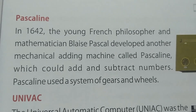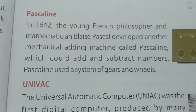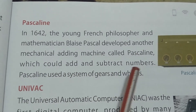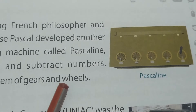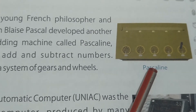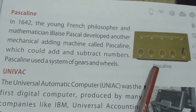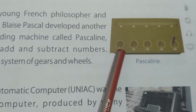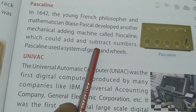Next comes the Pascaline. In 1642, the young French philosopher and mathematician Blaise Pascal developed a mechanical adding machine called the Pascaline, which could add and subtract numbers. The Pascaline used a system of gears and wheels. This machine is used to carry out addition and subtraction very easily and at fast speed.